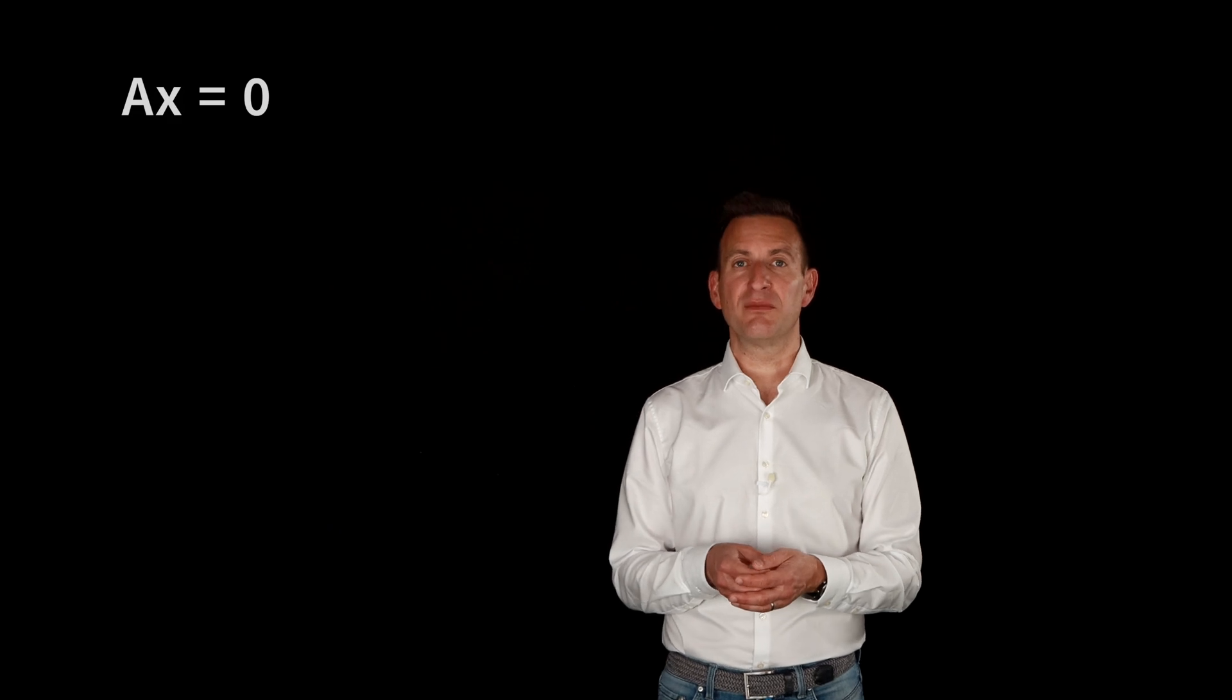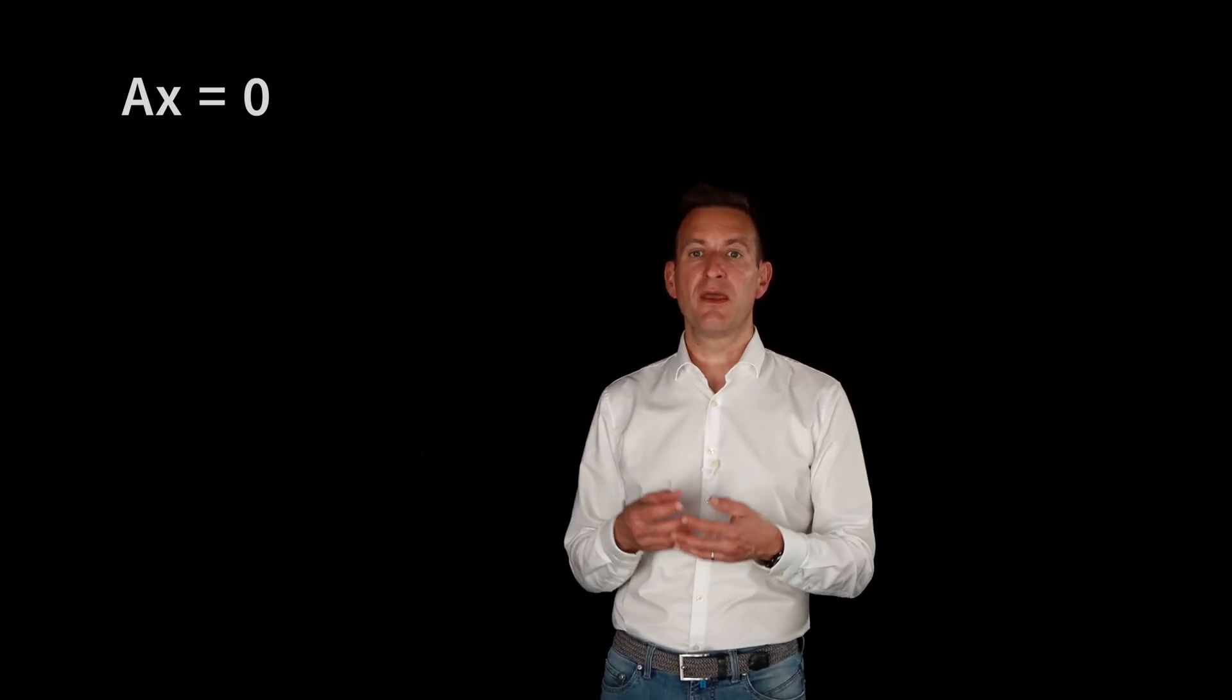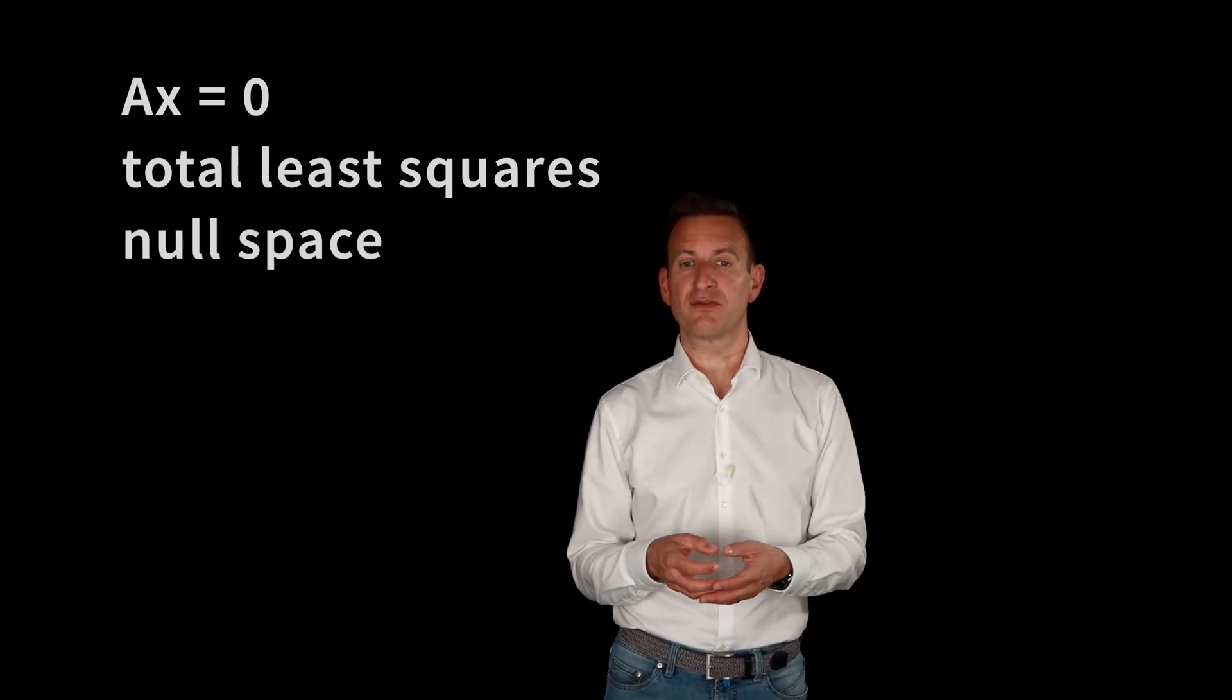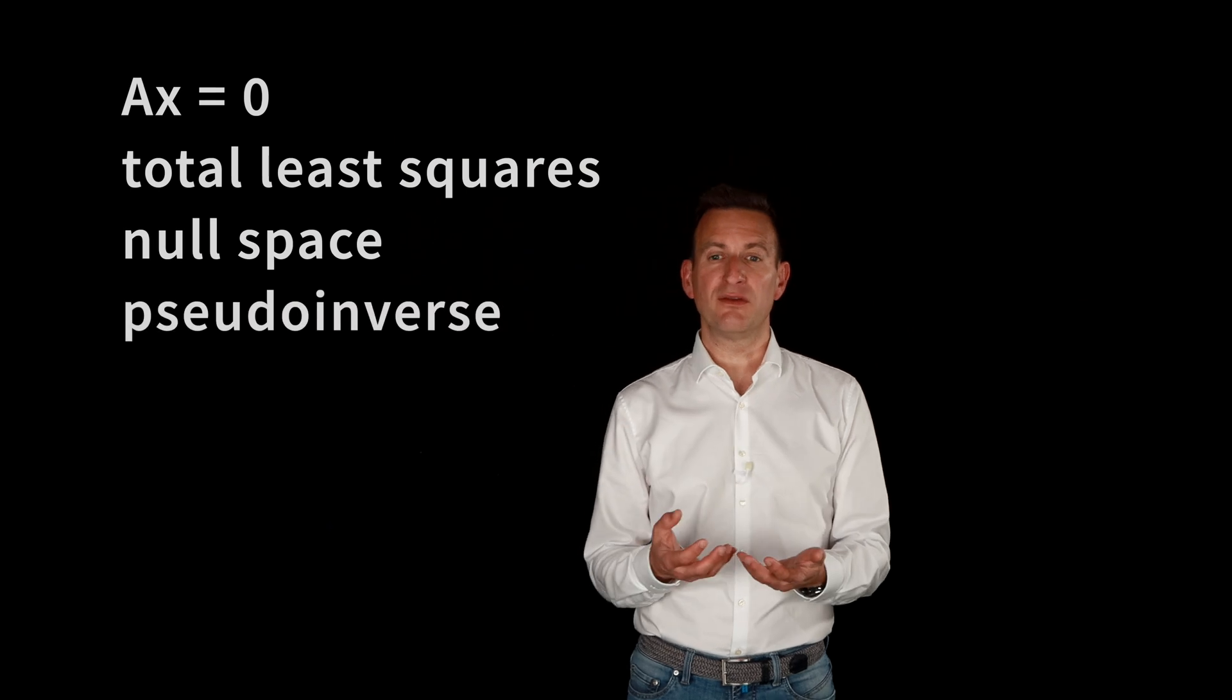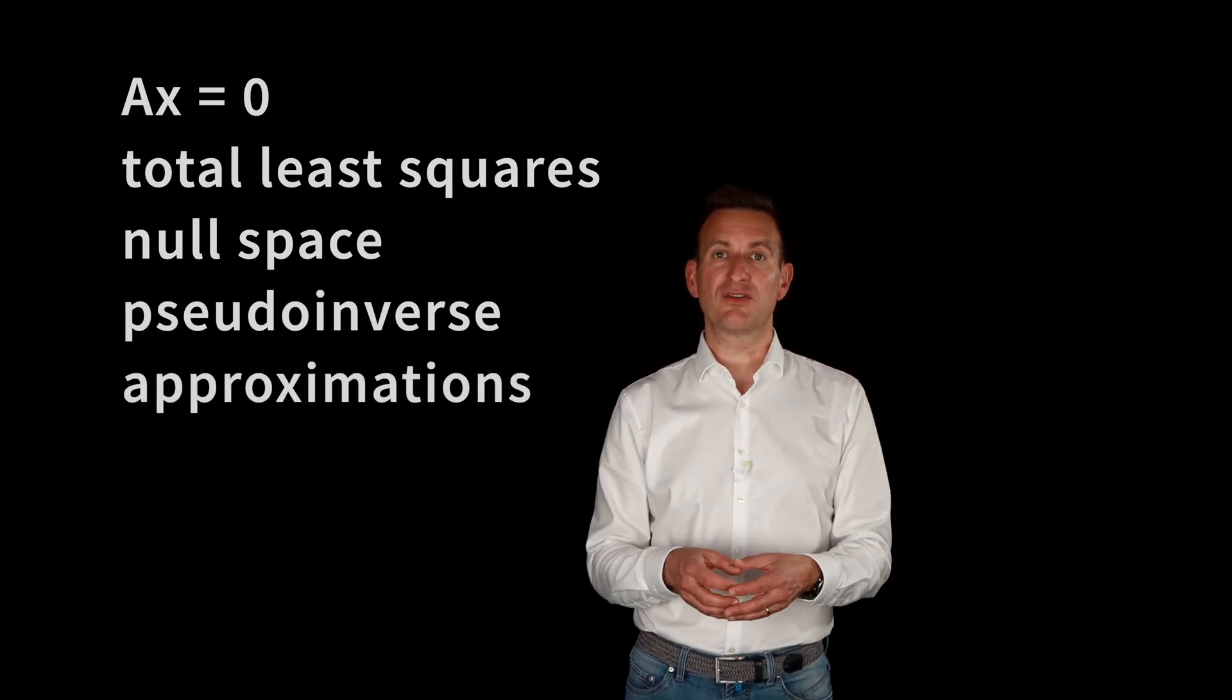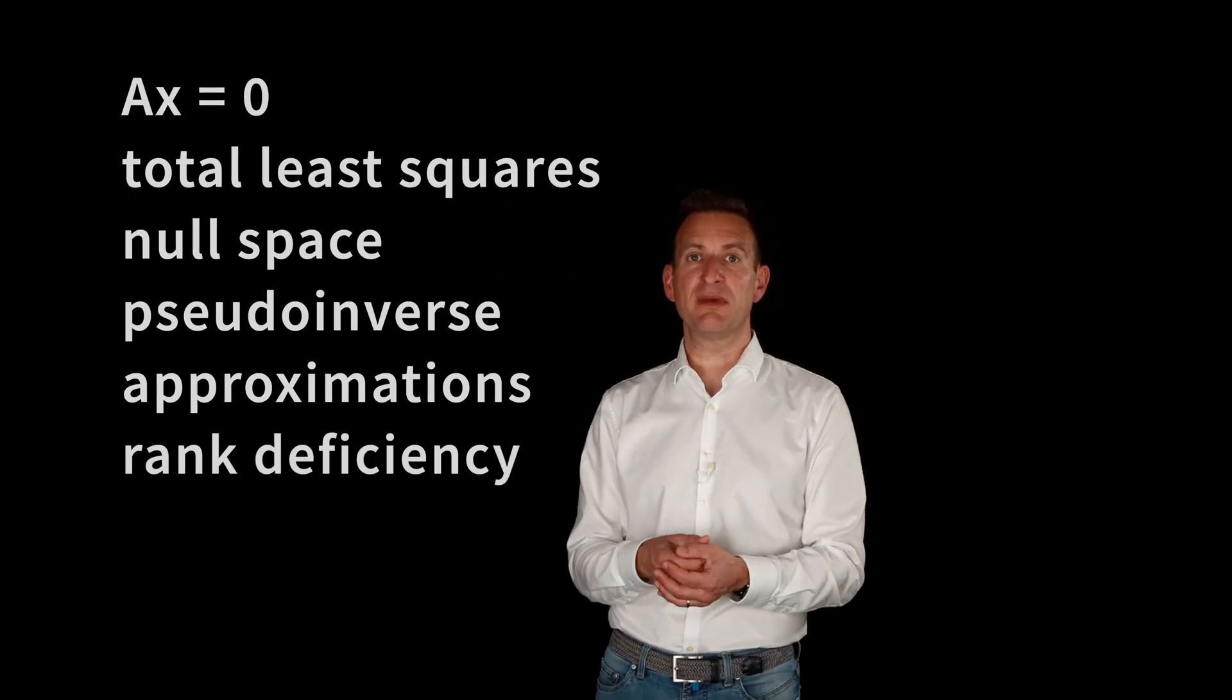And that's very useful information if you want to solve homogeneous linear systems. So AX equals zero can be solved using SVD. Or if you want to solve a total least squares problem or compute the null space of a matrix. Or compute the pseudo-inverse or an approximation of a matrix which is an orthogonal matrix. Or generate a matrix which has a certain rank deficiency and is as similar as possible to your original matrix.